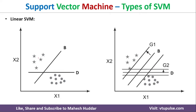Consider a dataset where one class is drawn with stars and another with circles. This data can be separated with a straight line, hence it is linear SVM. But when we draw multiple straight lines to separate the data, which line should be considered the hyperplane? That can be understood with the help of the following diagram.